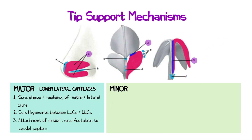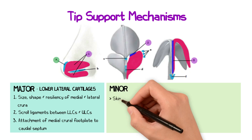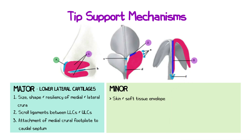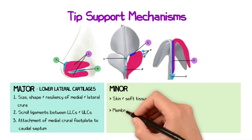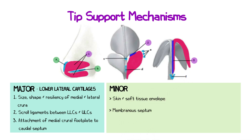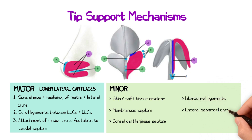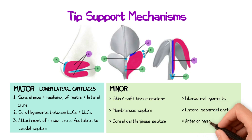The minor tip support mechanisms comprise the following: the skin and soft tissue envelope, the membranous septum, the dorsal cartilaginous septum, the interdomal ligaments, the lateral sesamoid cartilage, and the anterior nasal spine — essentially everything else related to the structure of the nose.